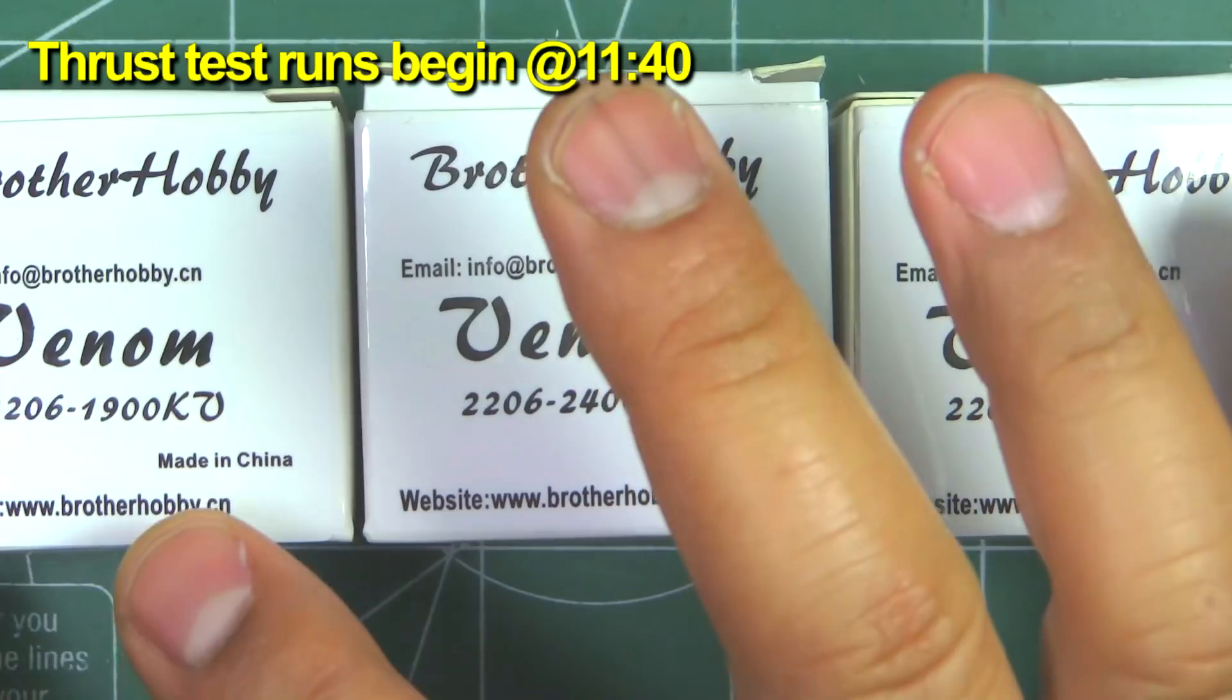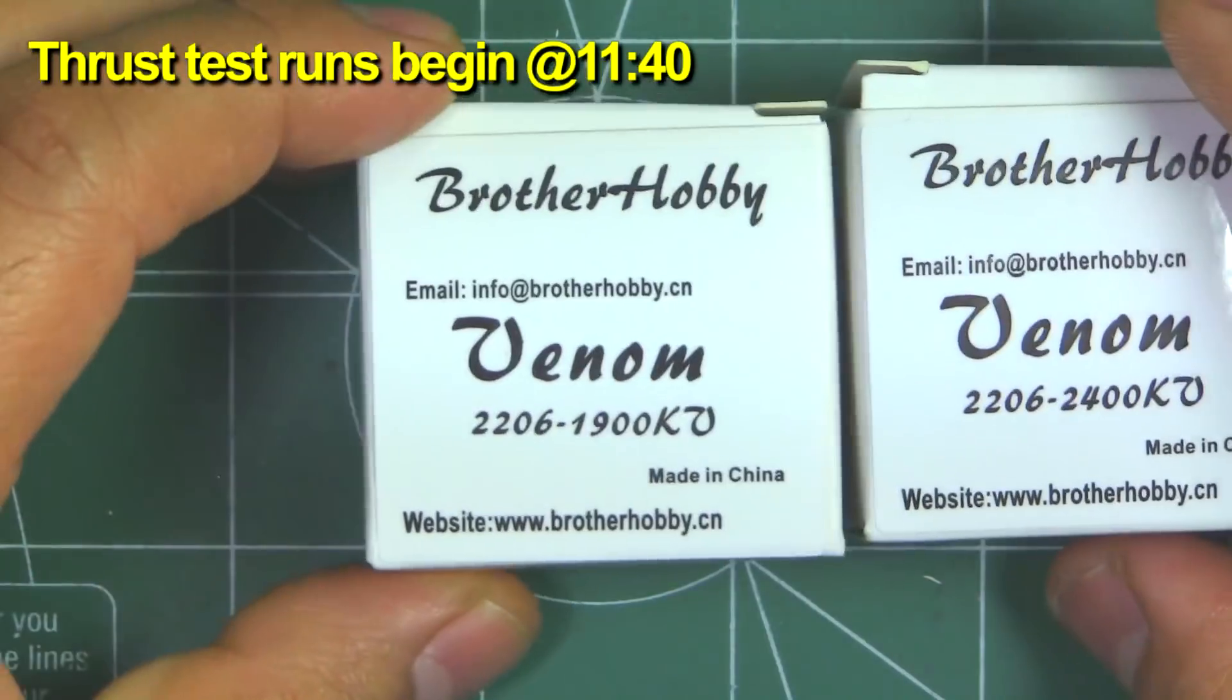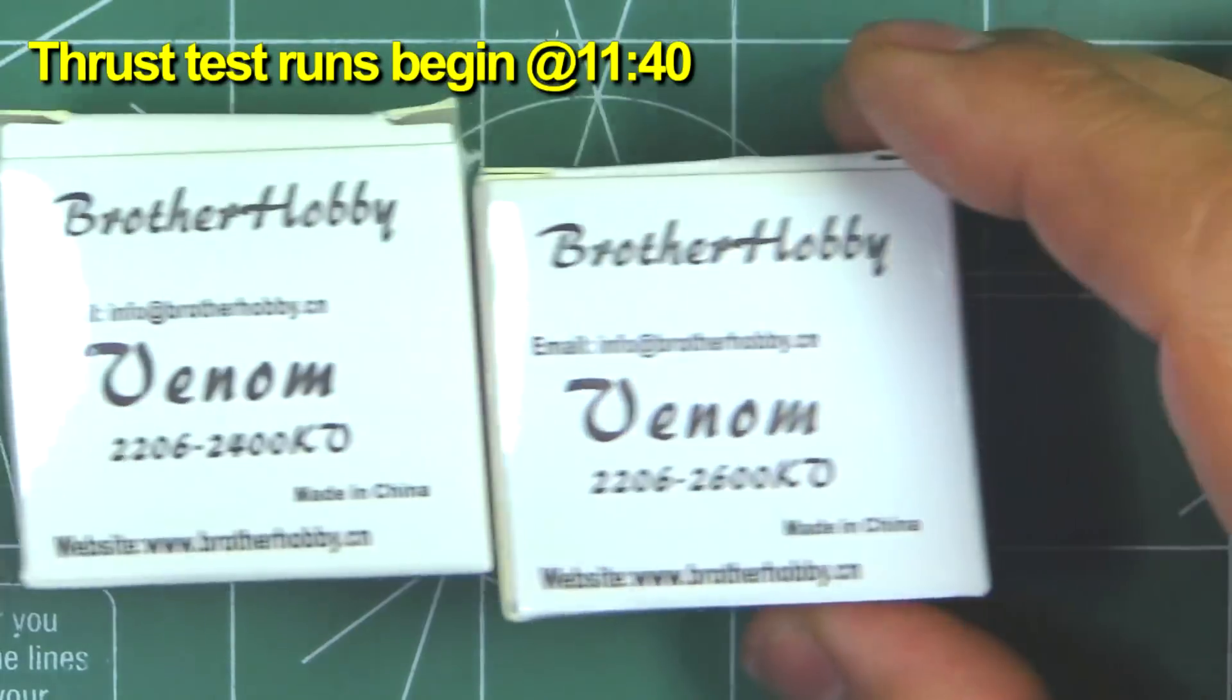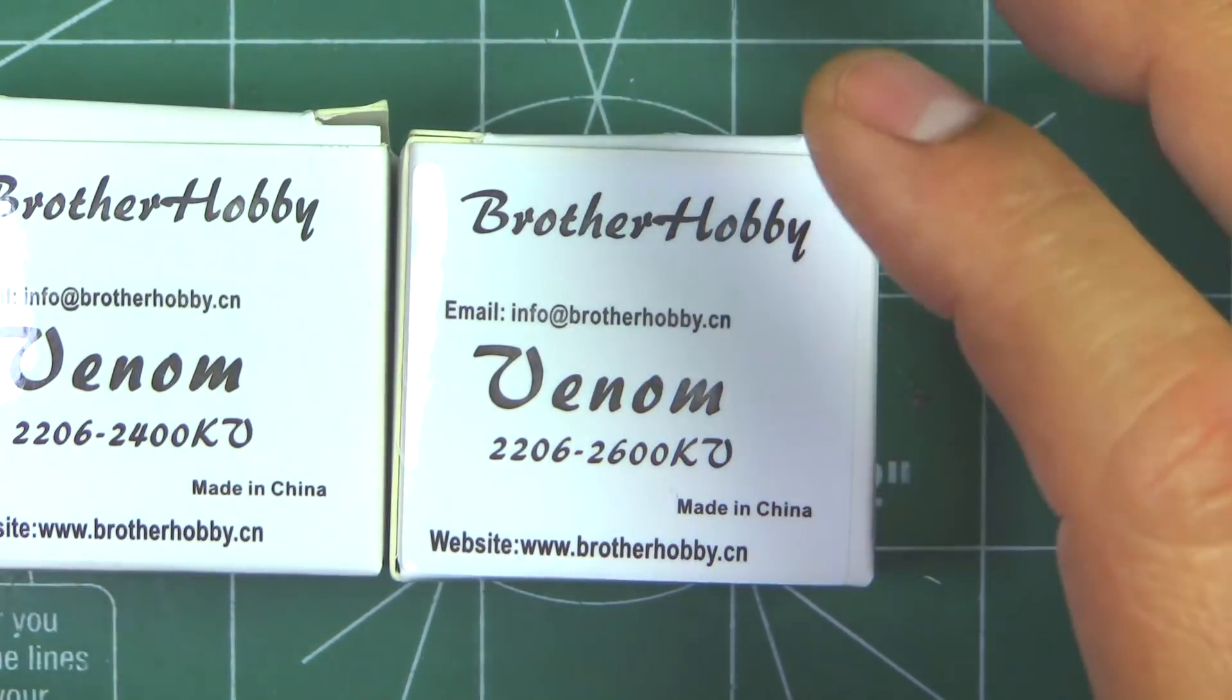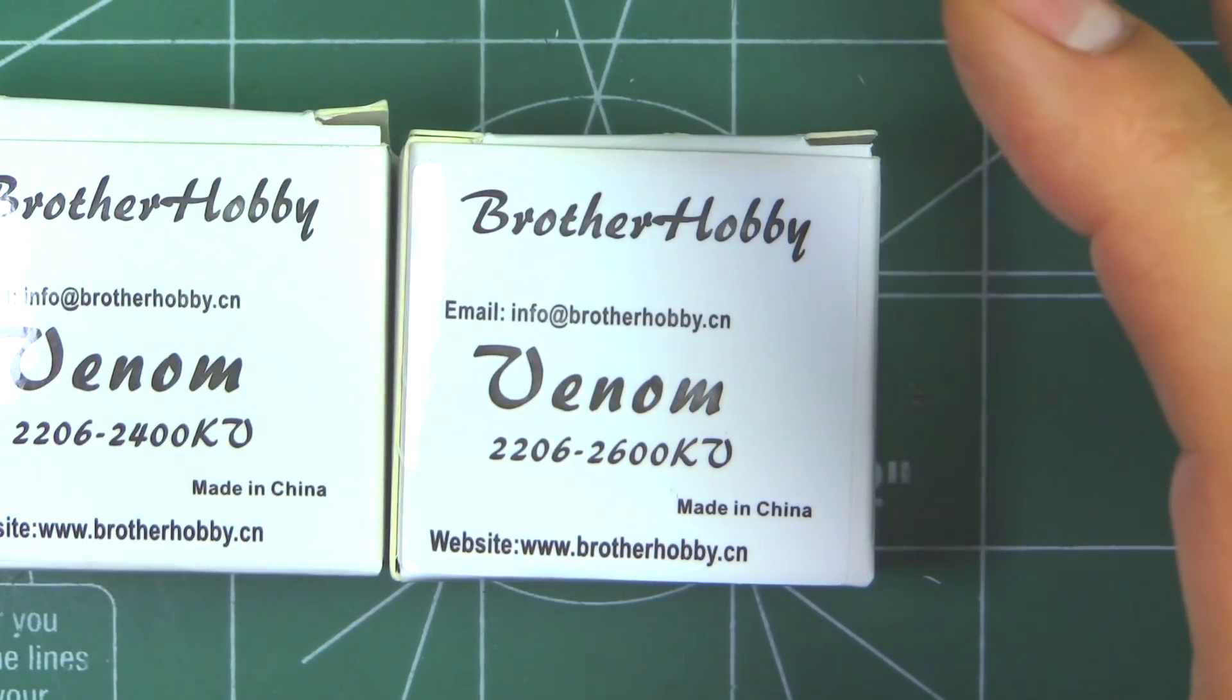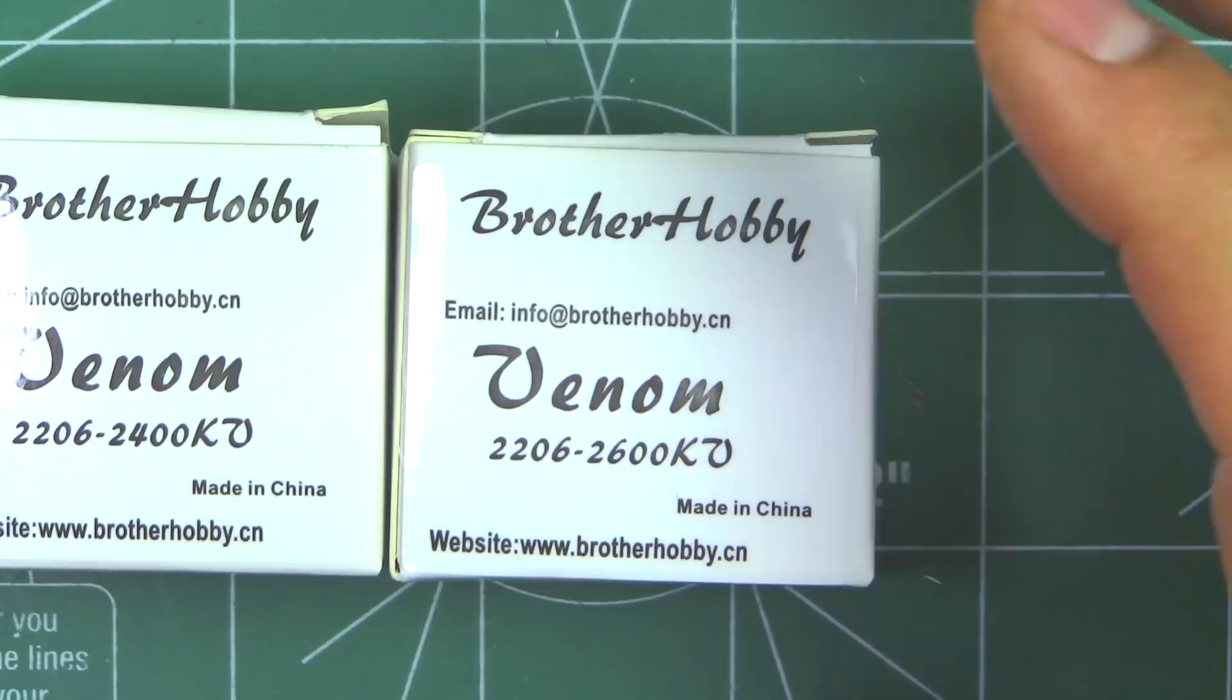Alright, so here we have the new Venom series from Brother Hobby. These are 2206, 1900 kV, 2400 kV and 2600 kV. These were sent in by Brother Hobby so I can test them and review them and show the results to you guys. Thanks Brother Hobby for sending them in for testing.